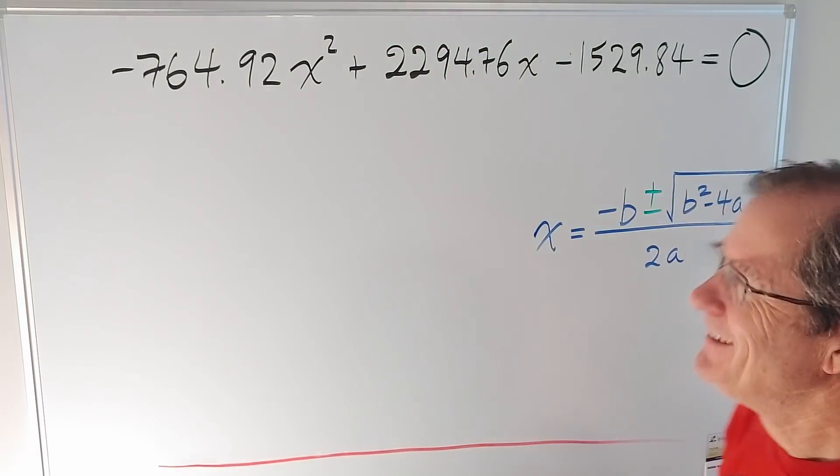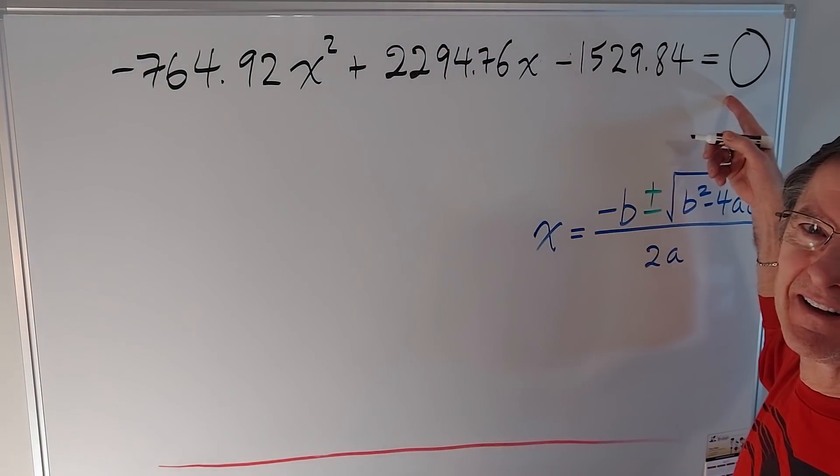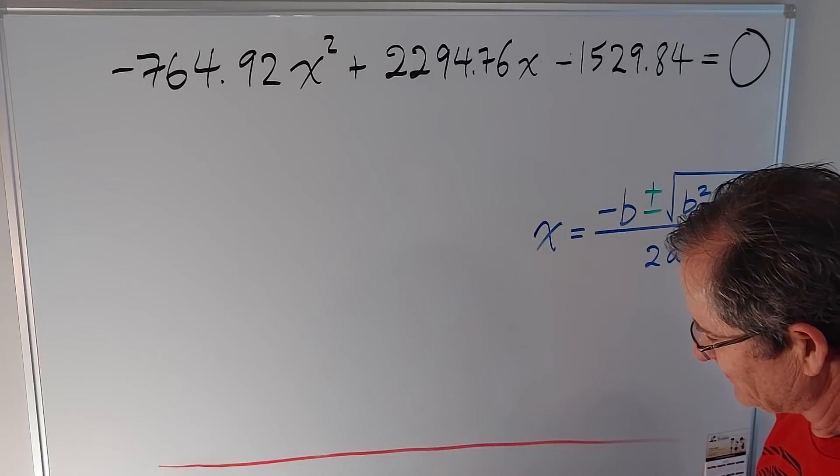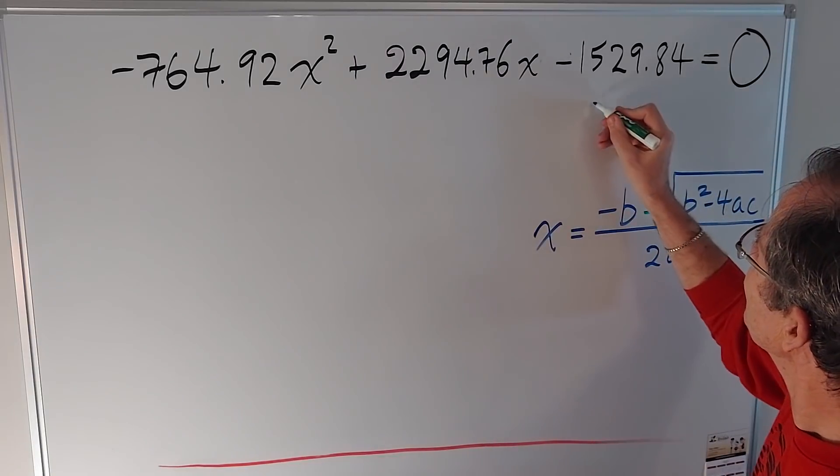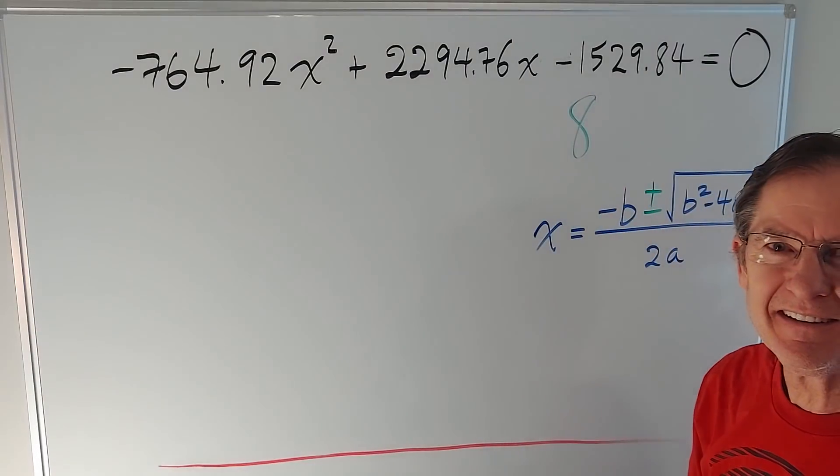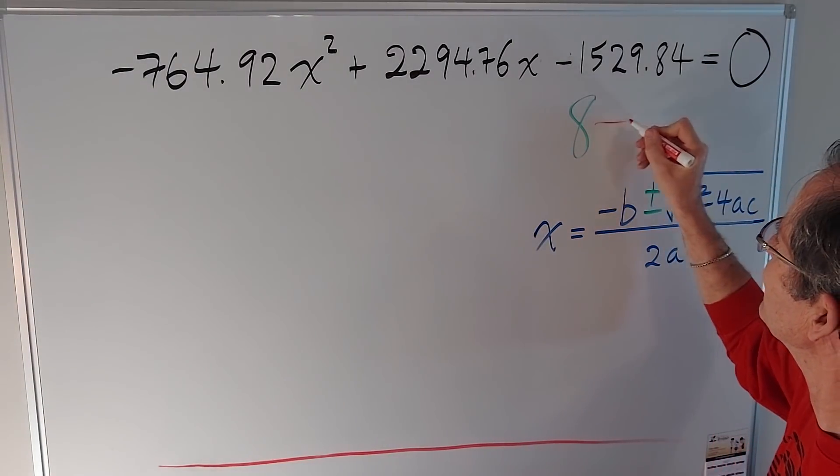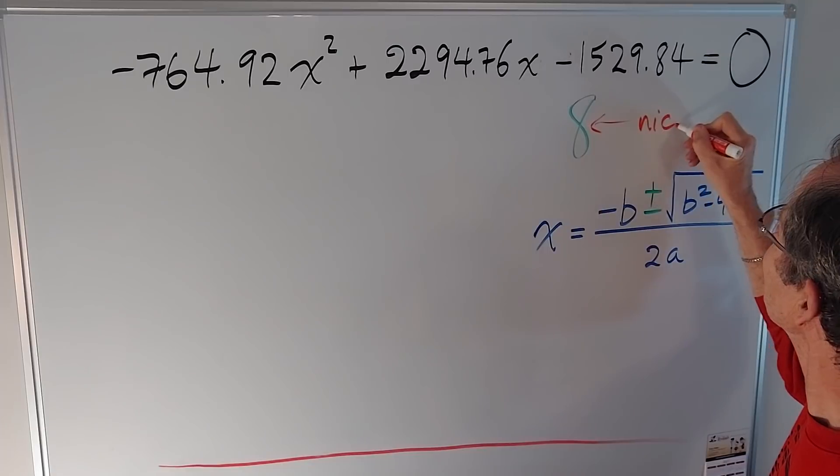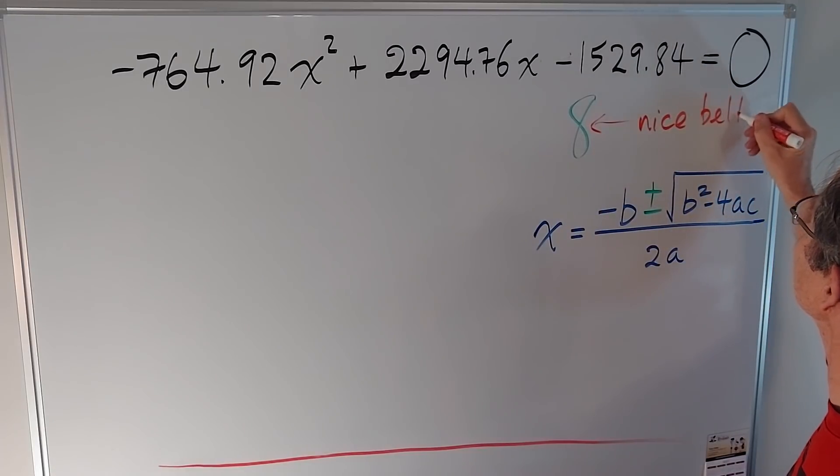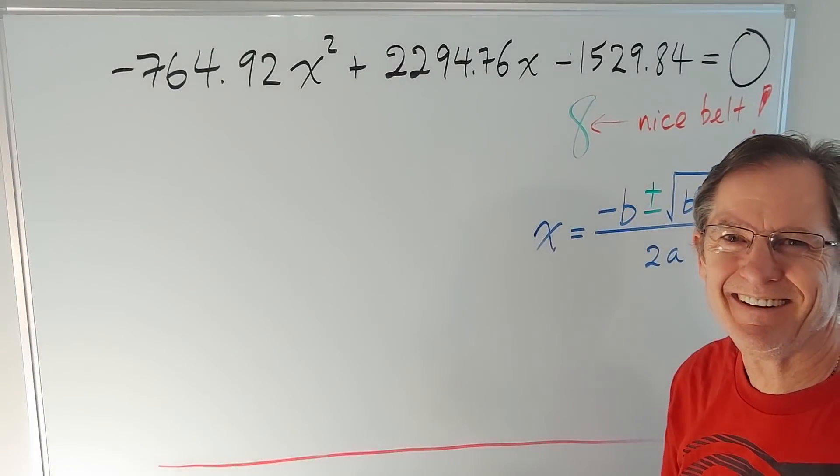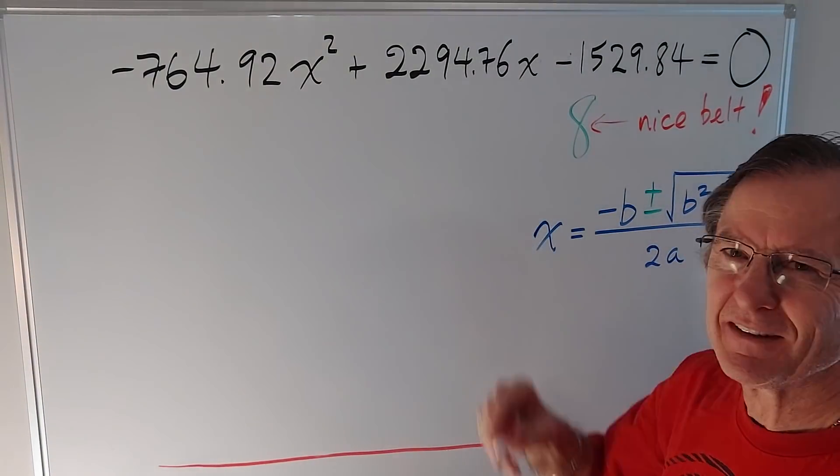Okay. What did the big fat zero say to the slender eight? Any great ideas? What the big fat zero said? Nice belt. Okay. Back to the equation. How do you solve it?